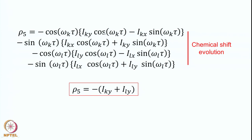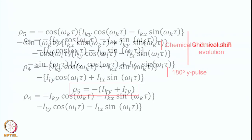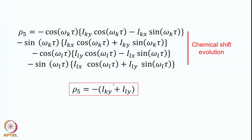From these two terms we retain only the Iky part, and similarly for the L spin we retain Ily. The two cross terms cancel, and therefore in the end for rho5 we get: minus, inside bracket, Iky plus Ily. This is exactly equal to rho2. Recall rho2 from the previous class was: minus Iky plus Ily — this is what we started off with. In the previous class, at rho5 we had a plus sign: rho5 was equal to plus Iky plus Ily.